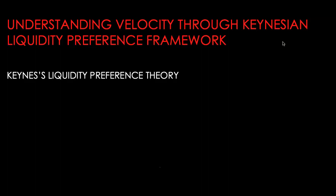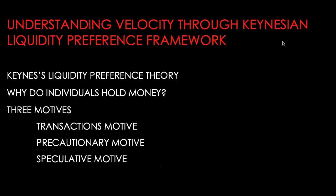The Keynesian liquidity preference framework gives us a money demand function which also explains fluctuations in velocity. According to the Keynesian perspective, there are three main reasons for holding money: the transactions motive, the precautionary motive, and the speculative motive.